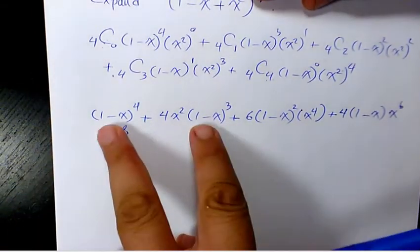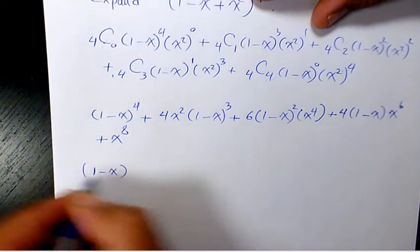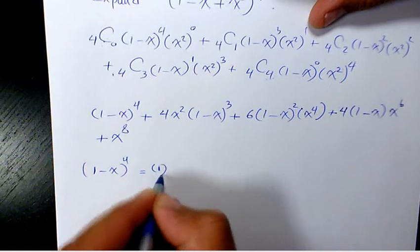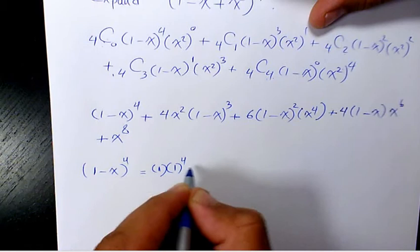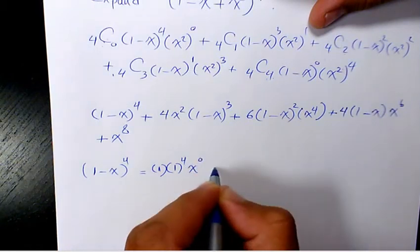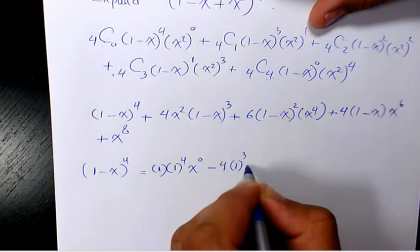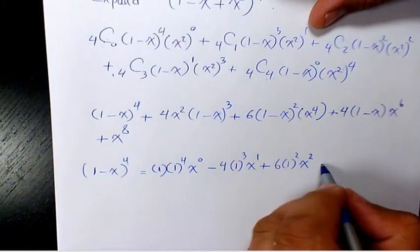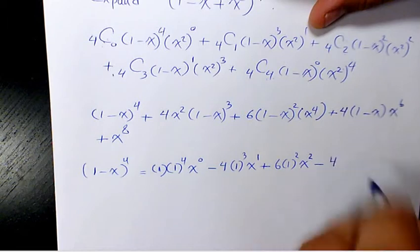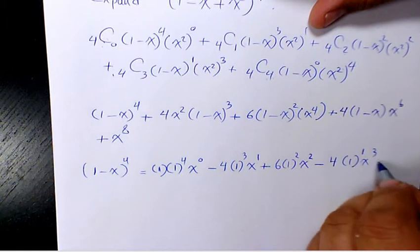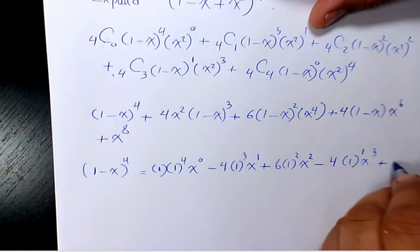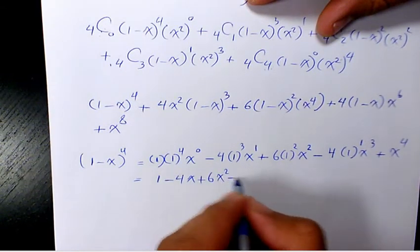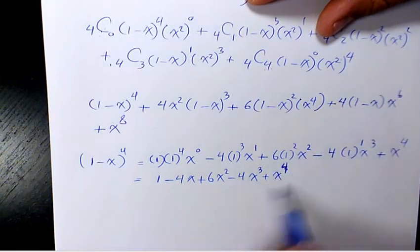Now in order to simplify, we need to expand these sub-expressions. The first one is (1 minus x) to the power of 4. When we expand it, it's going to be 1 times 1 to the power of 4 times x to the power of 0, minus 4 times 1 to the power of 3 times x to the power of 1, plus 6 times 1 to the power of 2 times x squared, minus 4 times 1 to the power of 1 times x cubed, plus 1 times x to the power of 4. So simplified: 1 minus 4x plus 6x squared minus 4x cubed plus x to the power of 4.